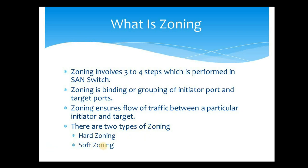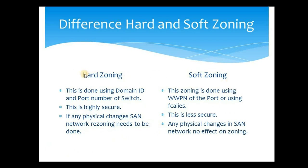Hard zoning is done using the domain ID and port number of the switch, while soft zoning is done using the WWPN of the port or the FC alias. The domain ID is unique to each switch present in the fabric — whenever a switch is connected to the SAN fabric, a domain ID is allocated to it. Hard zoning is highly secure, but soft zoning is less secure. In many environments you will see soft zoning only; hard zoning is rarely implemented, but if you need high security, you can use hard zoning.